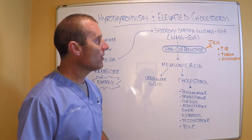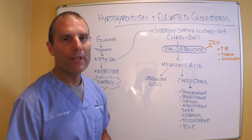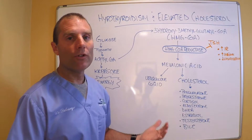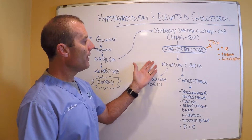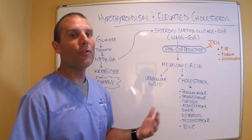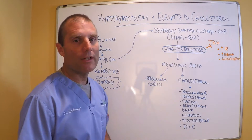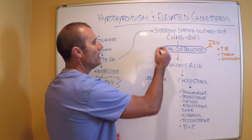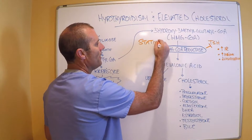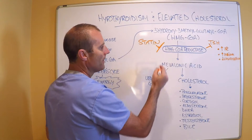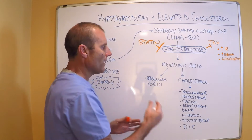In the medical model, traditionally what happens is somebody goes to their doctor and gets evaluated for high cholesterol. Many times their TSH is never looked at, so the doctor doesn't realize that the reason they have elevated cholesterol is because they have hypothyroidism — their TSH is chronically high, this enzyme is sped up, and they get more cholesterol production. So the doctor may put them on a statin, which actually prevents HMG-CoA from being converted into mevalonic acid, and cholesterol levels drop.